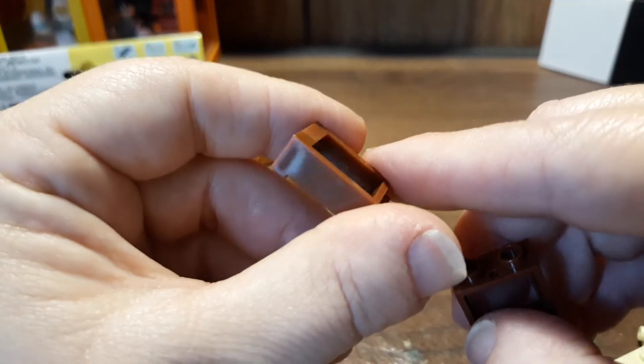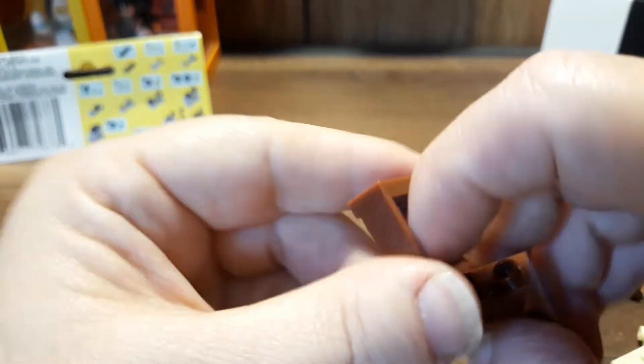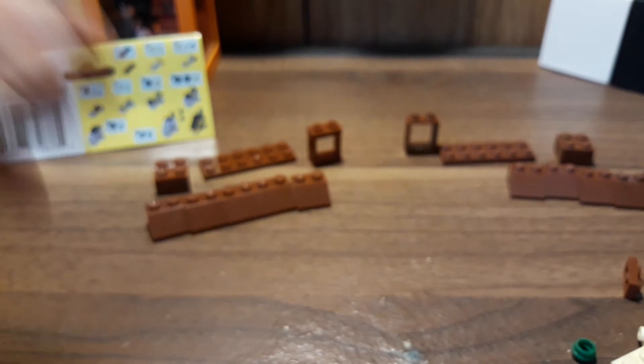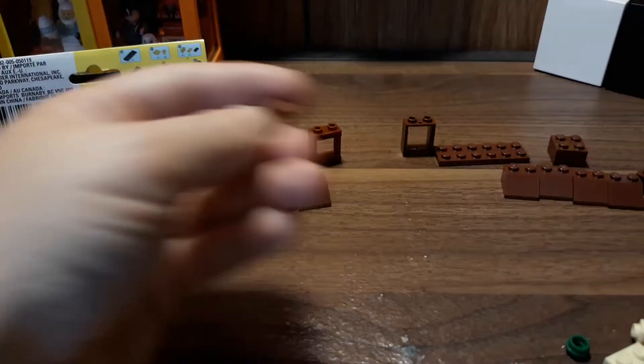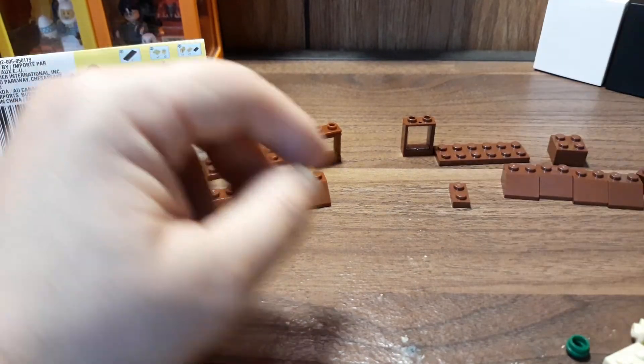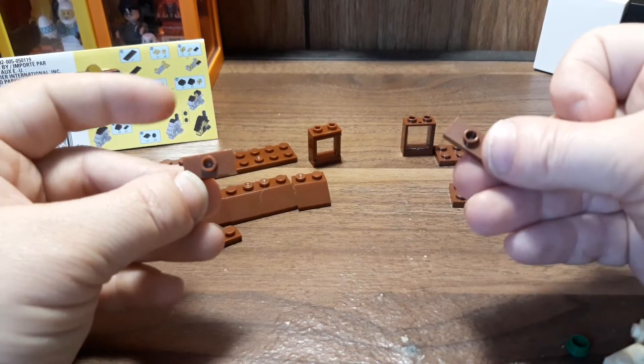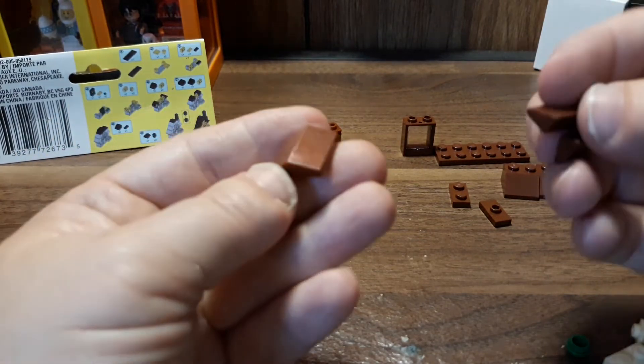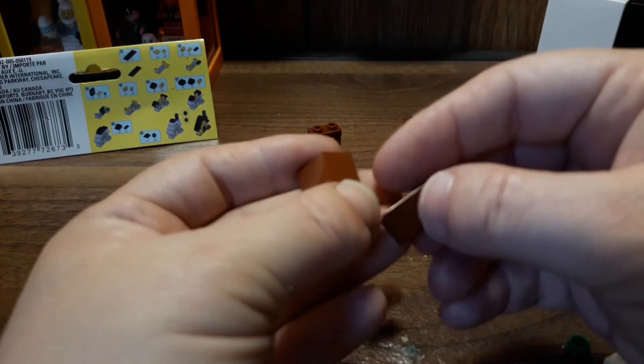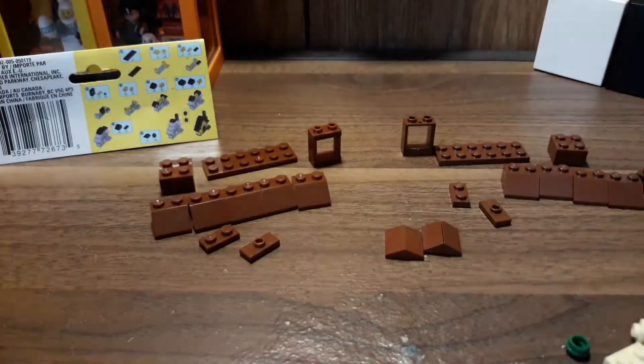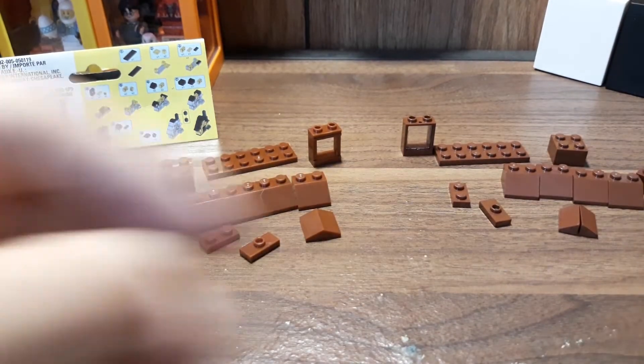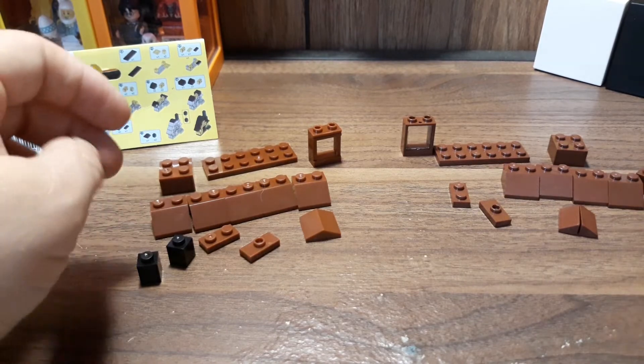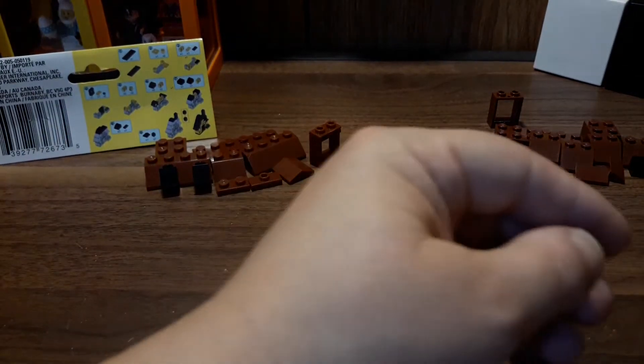You need a one by two plate, one of them, a one by two jumper plate. Also you need one of these two by two slopes but I don't have this in brown so I am actually going to use two of the one by two cheese wedges and put them back to back to make the same thing, so it works just as easy. Also need two black one by one bricks which I do have.